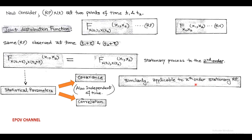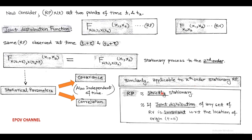Similarly, this can also be applicable to the kth order stationary random process. Now, we note an important point. The random process is said to be strictly stationary if the joint distribution of any set of random variables is also invariant with respect to t equals 0, that is, the location of the origin.